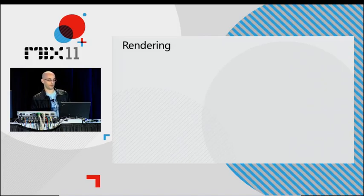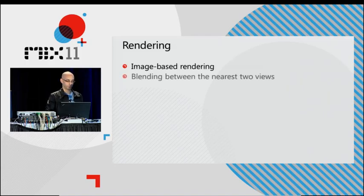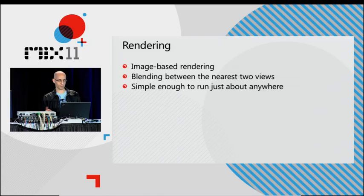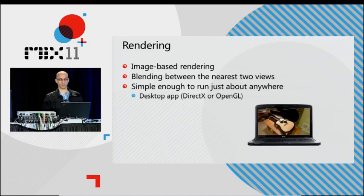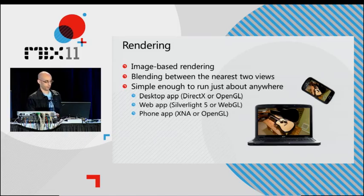The rendering stage uses an image-based rendering algorithm — that means we're using only pixels from the original images, which is what preserves the photorealistic nature and makes it look so real. Every pixel is coming from one of the photos I took. In order to present a new view in between the angles where you took the pictures, we're blending between the nearest two views. This is a simple enough algorithm that we can run it just about anywhere with hardware-accelerated 3D graphics — on the desktop using DirectX or OpenGL, in the web using Silverlight 5 or WebGL, and on the phone using XNA on Windows Phone or OpenGL on other platforms.